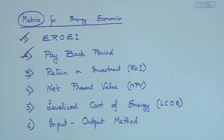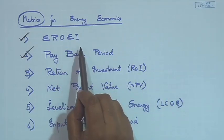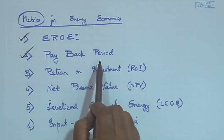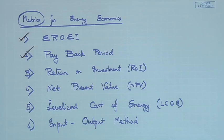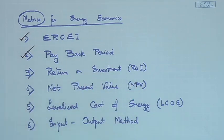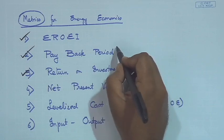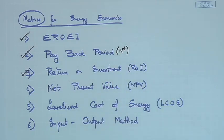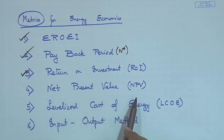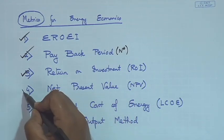Welcome back. In the last class, we were talking about different metrics of energy economics. We have covered three such metrics so far: the first one is EROEI, the second one is payback period, and the third one — denoted by N-star — was return on investment. Today we will take up the fourth one, which is net present value.